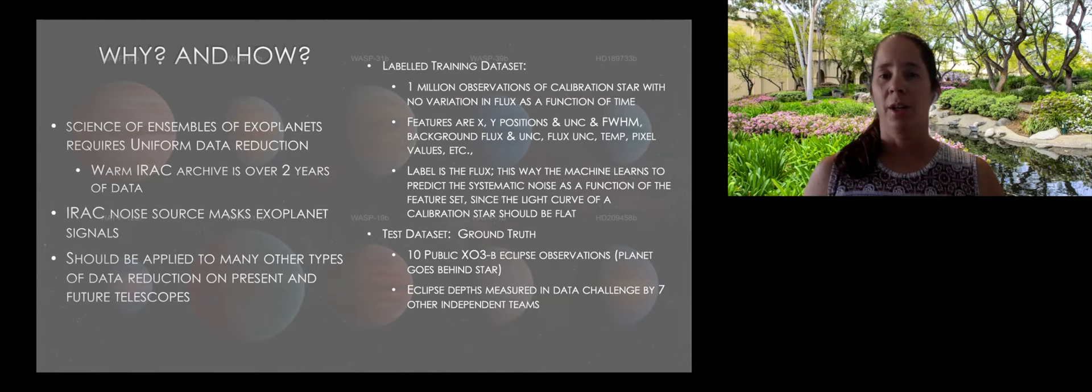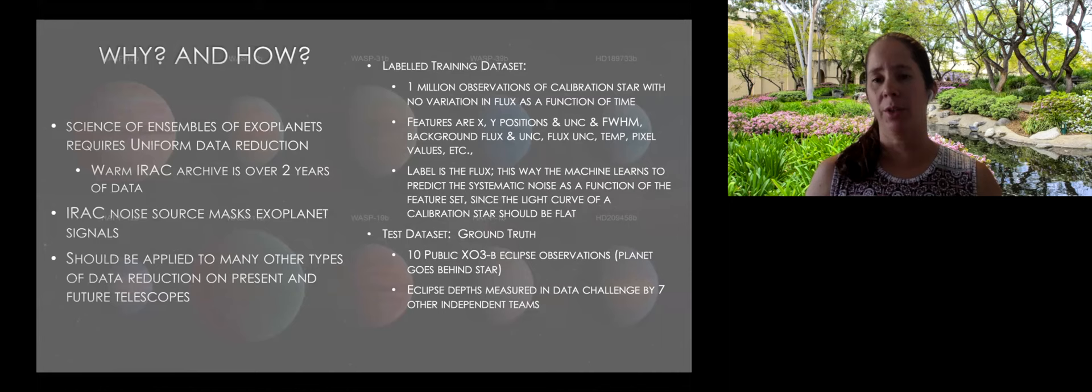So how do I do it? Since this is a quick talk, I've got a labeled training set, which is a calibration star of which I've got about a million observations. And because it's a calibration star, it's been chosen specifically not to vary in flux as a function of time. Whereas an exoplanet, in case you're not familiar, you would see the star host of the exoplanet with just a flat light curve. And then as the exoplanet goes either in front or behind it, the light decreases. And then as it comes back out again, the light would increase and you would come back up to flat. So that is the shape we're looking for. But in order to get a label training set, I have a star which has zero variation. So just a flat light curve. My features are everything that I can think of, and the label is the flux. So in this way, because it should be a flat light curve, any systematics in the light curve that create shape in the light curve will come out in this calibration star. And that way the machine can learn to predict the systematic noise as a function of the feature set.